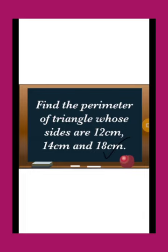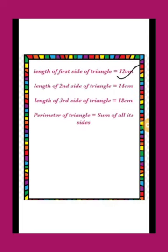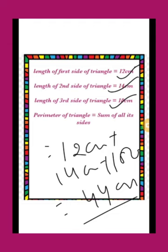The perimeter of a triangle is equal to the sum of all its sides. Length of the first side is 12 cm, the second side is 14 cm, and the third side is 18 cm. So we add 12 + 14 + 18, and the answer is 44 centimeter. The perimeter of the triangle is 44 centimeter.